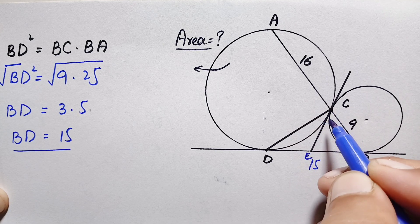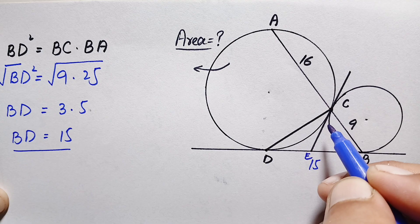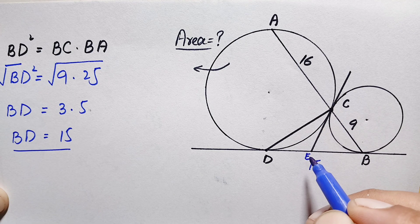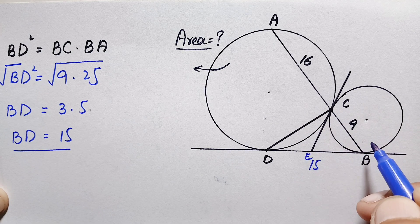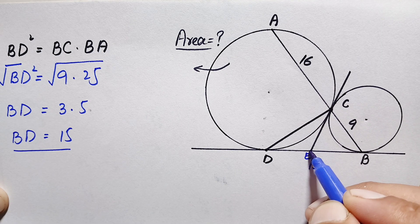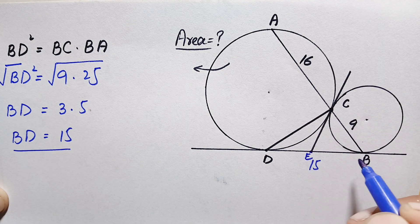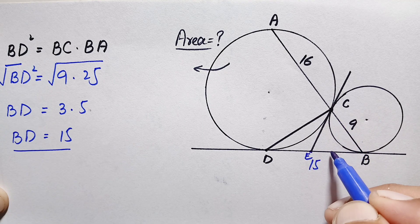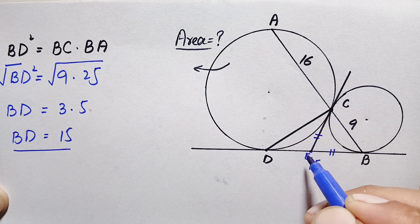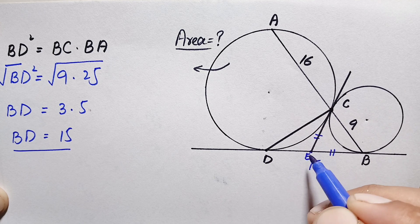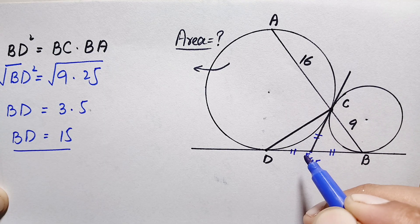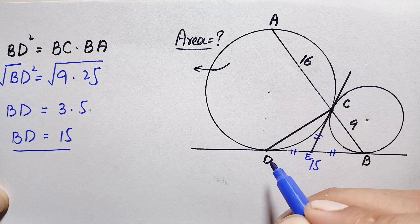We will prove that the angle at point C is a right angle, 90 degrees. For that, we use the equal tangents theorem: if we have two tangents from an external point to a circle, the lengths of those tangents are equal. From point E to the smaller circle, tangents EB and EC are equal. Similarly, from point E to the bigger circle, tangents ED and EC are equal.